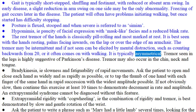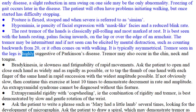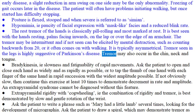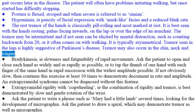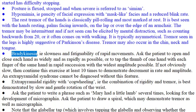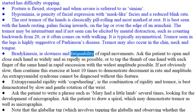It is typically asymmetrical. Tremor seen in the legs is highly suggestive of Parkinson's disease. Tremor may also occur in the chin, neck, and tongue. Bradykinesia, i.e. slowness and fatigability of rapid movements.